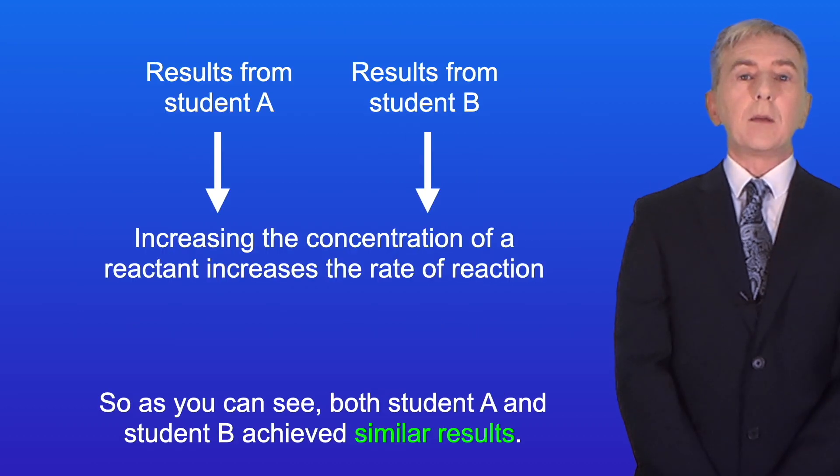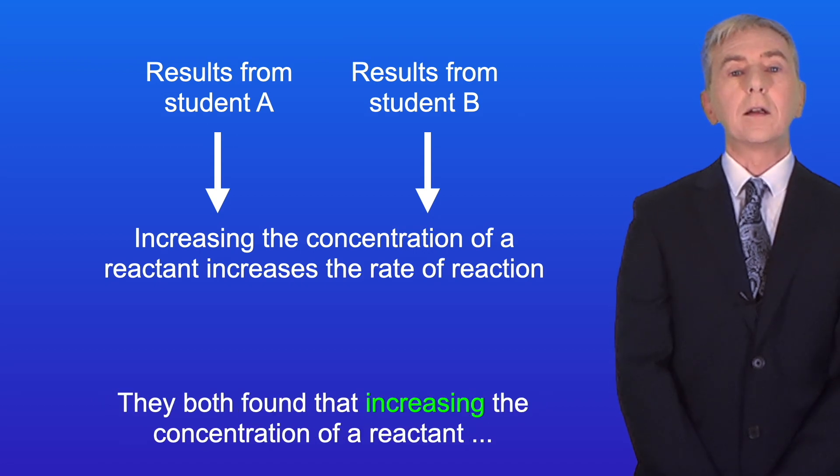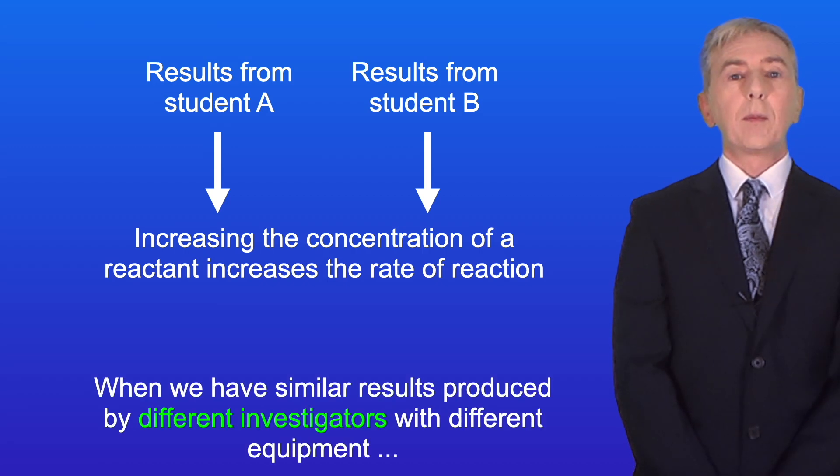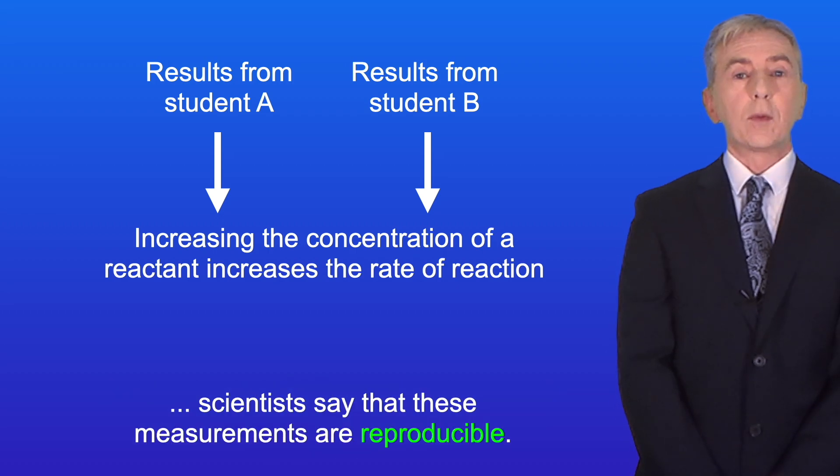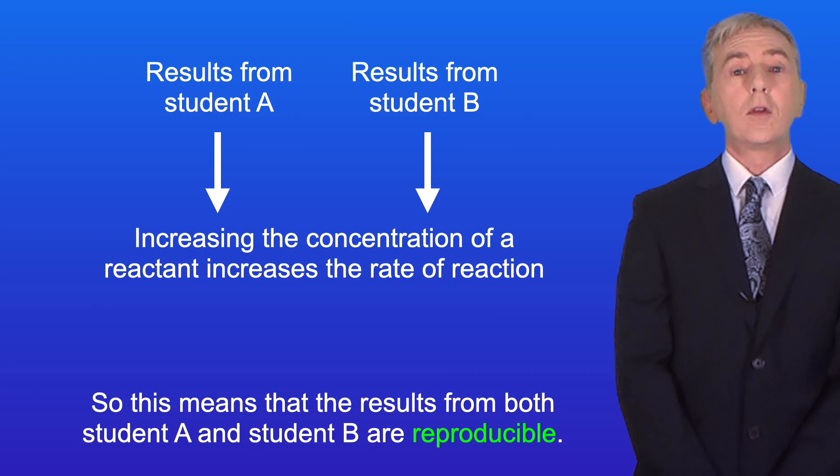As you can see both student A and student B achieved similar results. They both found that increasing the concentration of a reactant increases the rate of reaction. When we have similar results produced by different investigators with different equipment, scientists say that these measurements are reproducible. So this means that the results from both student A and student B are reproducible.